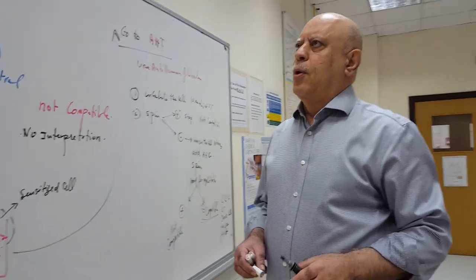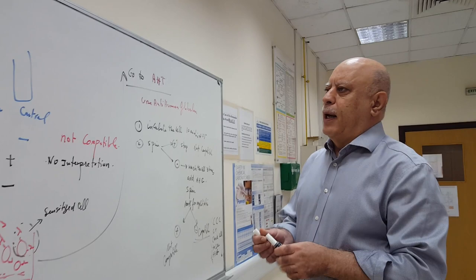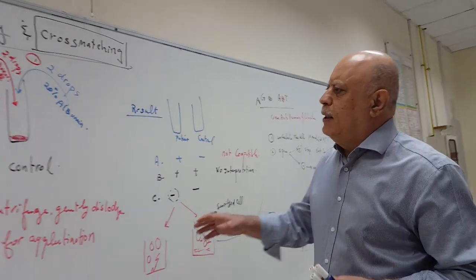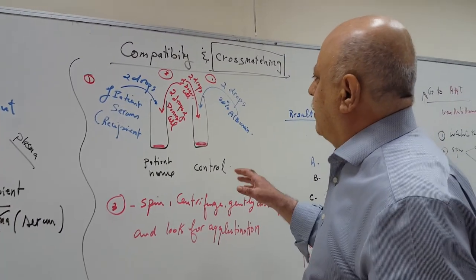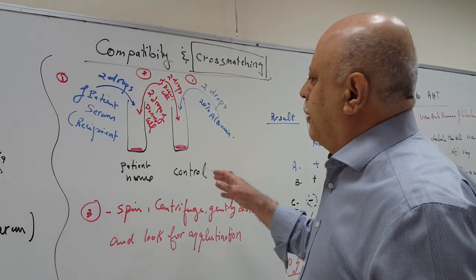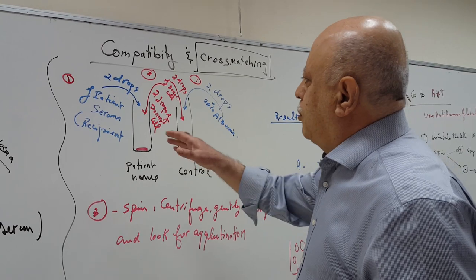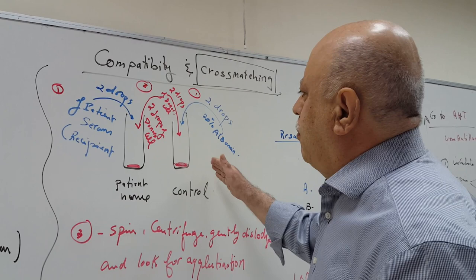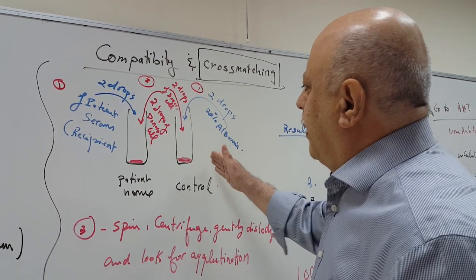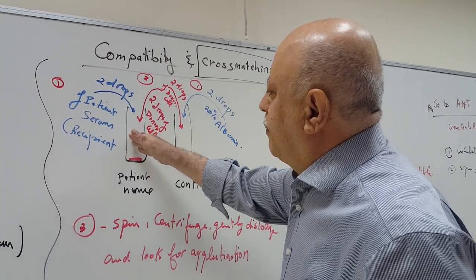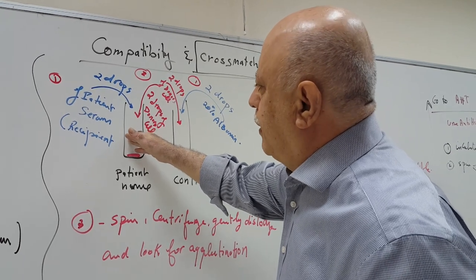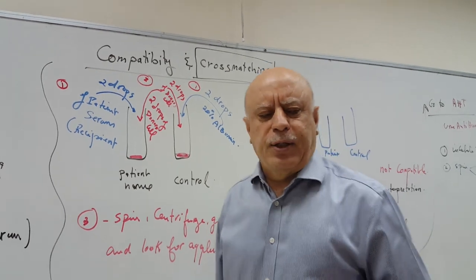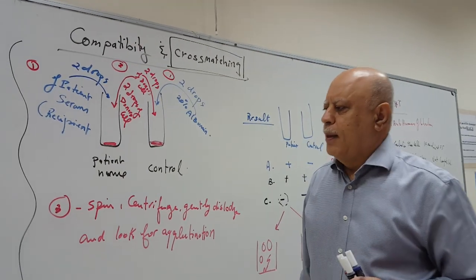In summary, for compatibility in cross-matching, the recipient must have no antibody against any of the 400 antigens on the donor's RBCs. If such an antibody is present, it could bind to those antigens and trigger an immune or transfusion reaction.